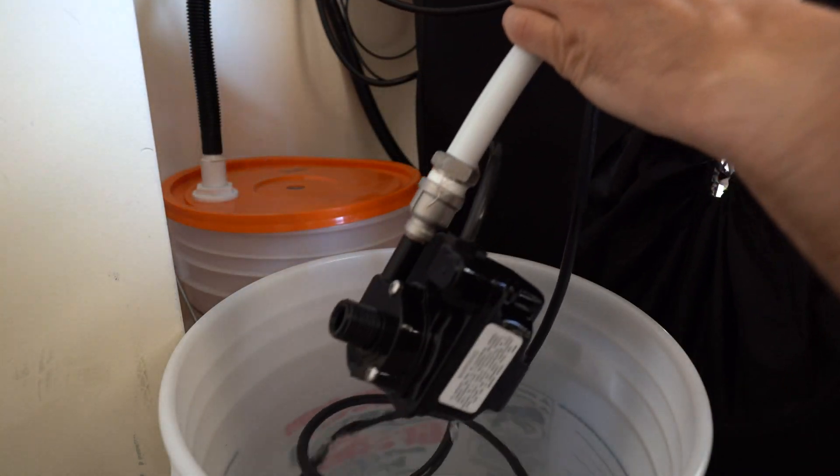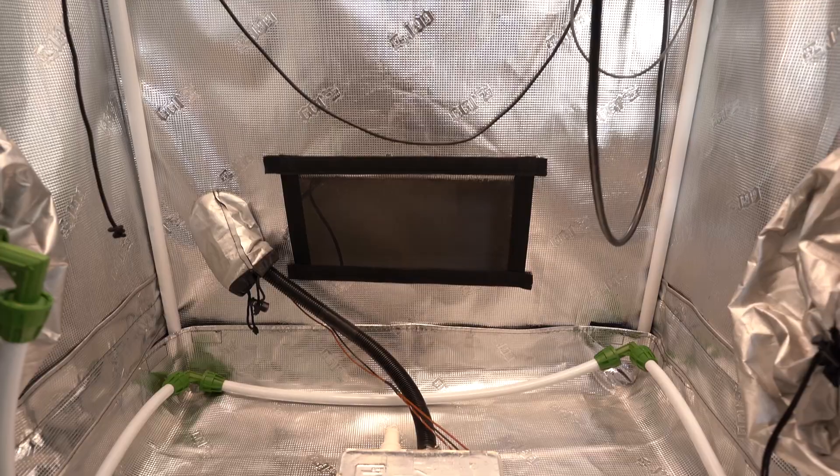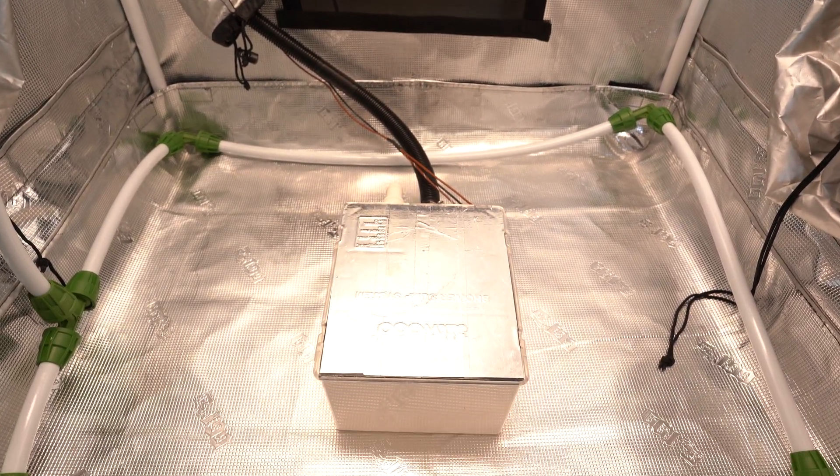To start, I hooked up my low pressure submersible pump to the main watering line. I then made an irrigation loop at the bottom of the tent, and the loop will help equalize the pressure in the main line.